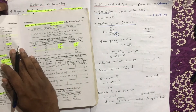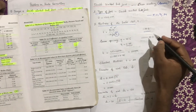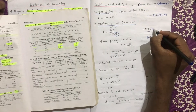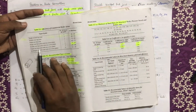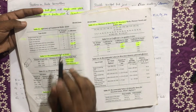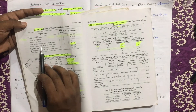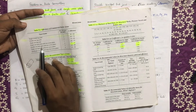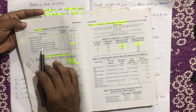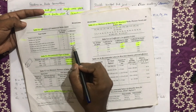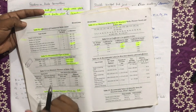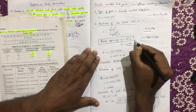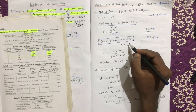From tables 5.1 and 5.2: assuming the efficiency for a double row butt joint with one cover plate, we assume eta is equal to 0.75 — that is, efficiency is 75%.